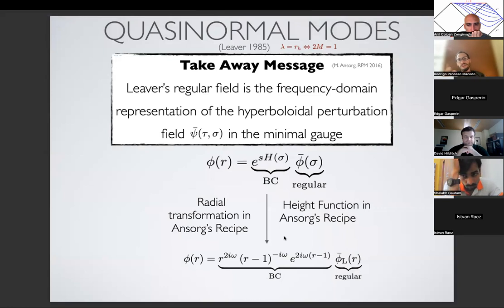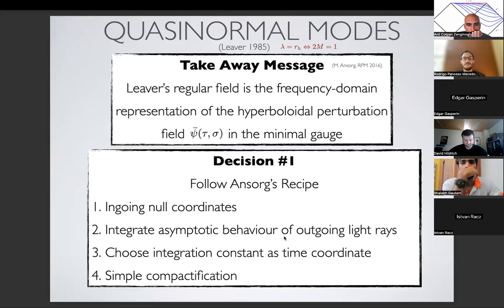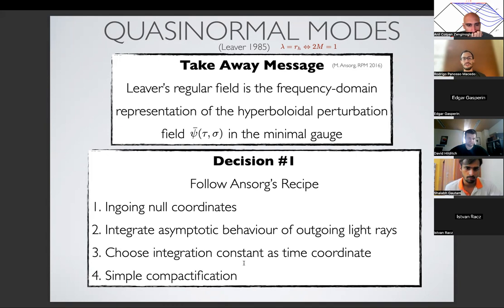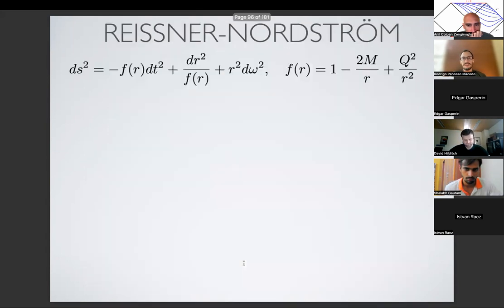This connects with works in the literature. Why not take my decision and from now on just follow his recipe? There is intuition on how to construct it, it's a simple result, and it connects with Leaver. So the recipe is: first go to ingoing null coordinates, integrate the asymptotic outgoing light rays, choose the integration constant as a time coordinate, and choose a simple compactification function. Voilà — I have what I want.